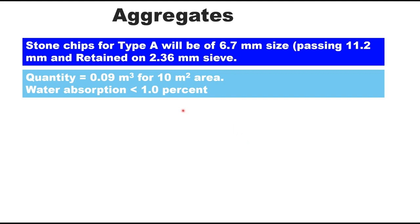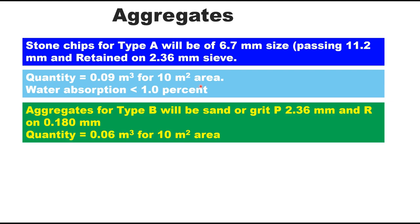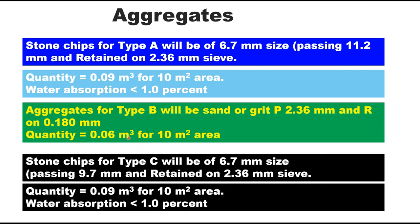Aggregates for Type A seal coat are stone chips of 6.7 mm size, passing 11.2 mm and retained on 2.36 mm sieve; quantity is 0.09 m³ for 10 m² area, and water absorption should not be more than 1%. For Type B, aggregates are sand or grit passing 2.36 mm and retained on 0.18 mm (180 micron); quantity of sand is 0.06 m³ for 10 m² area, and water absorption should be less than 1%.